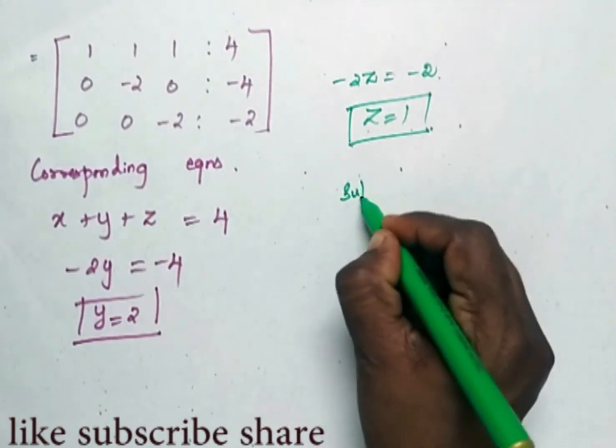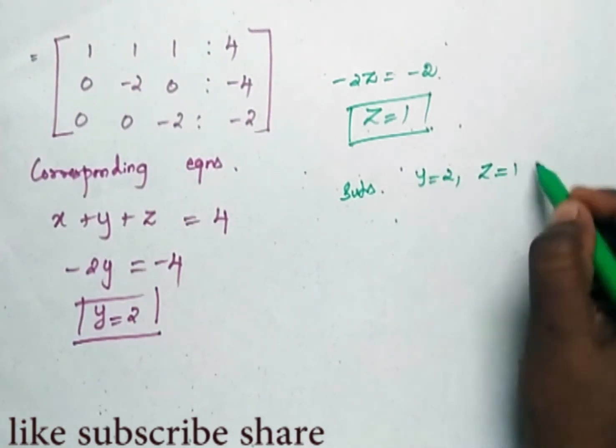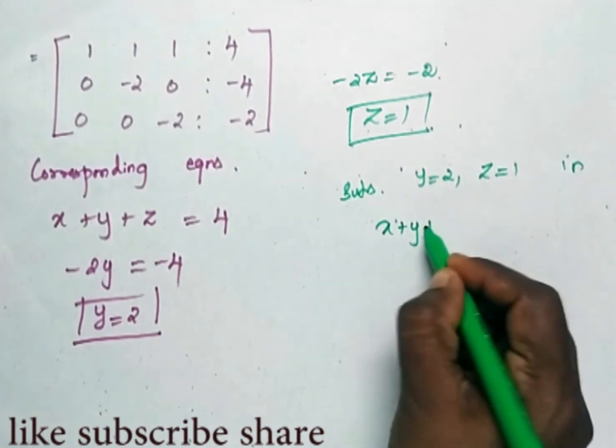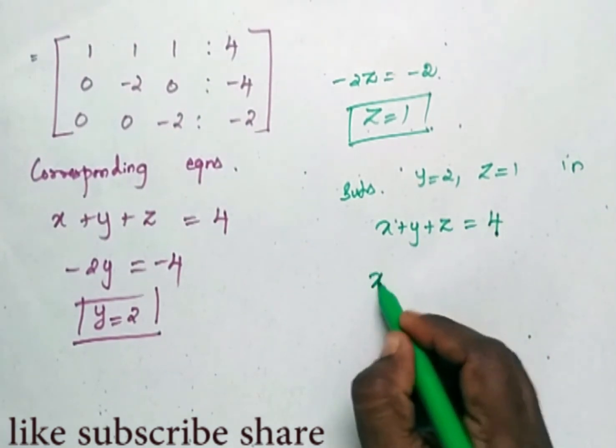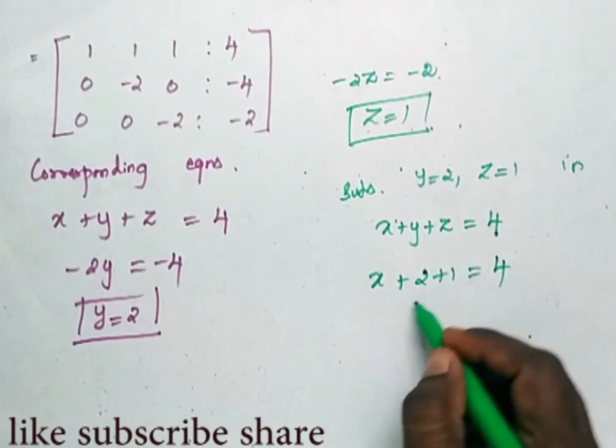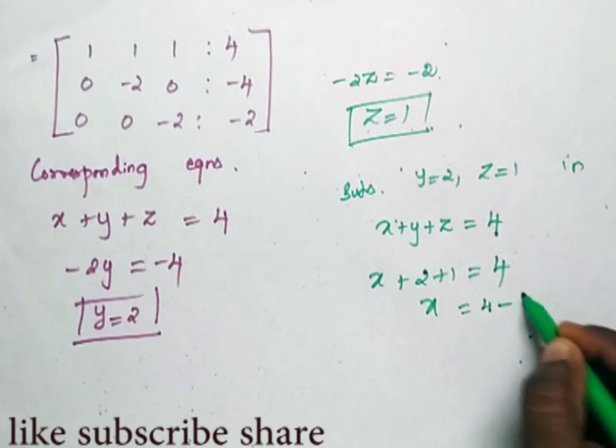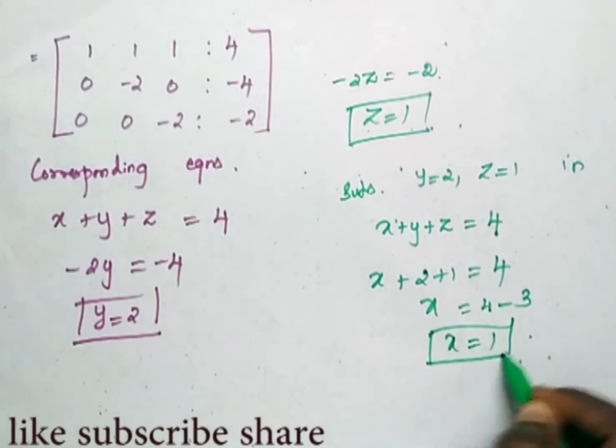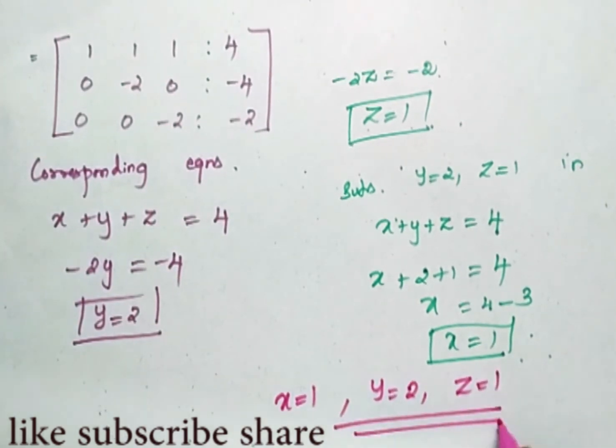Now substitute Y is equal to 2, Z is equal to 1 in X plus Y plus Z is equal to 4. So we have X plus 2 plus 1 equals 4. So now my X value is 4 minus 3, so X is equal to 1. So the values which I obtain are X is equal to 1, Y is equal to 2, and Z is equal to 1.